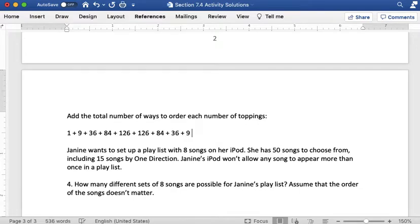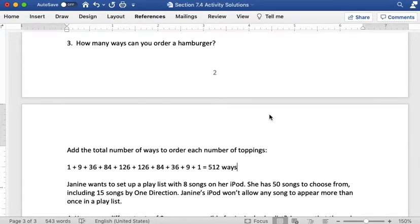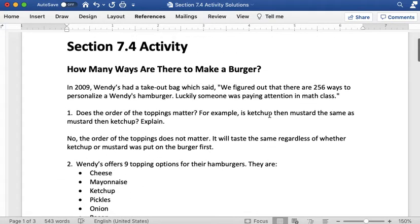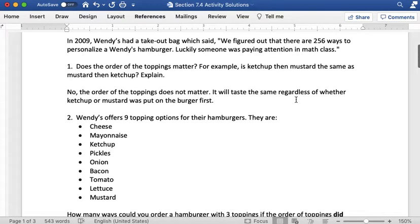But when I add all these numbers together on my calculator, I should get a total of 512 ways. So there are 512 ways to order a hamburger, which actually is more than the number of ways that they advertised. They were saying that there were 256 ways, but it's actually twice as many ways as what they suggested on their advertisement.